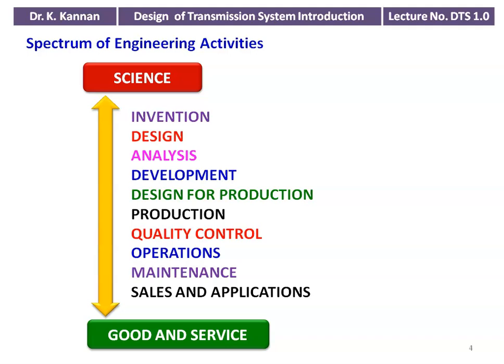New things are invented or innovatively developed — that is Invention — and then they must be designed. We then perform analysis for the design, followed by development. We convert the design into a particular drawing, then Design for Production. There are restrictions on the production and manufacturing side, so we must consider production limitations and redesign the entire system. Then we go for Production, checking quality — Quality Control. We perform all operations, including production and maintenance, then finally Sales and Applications.